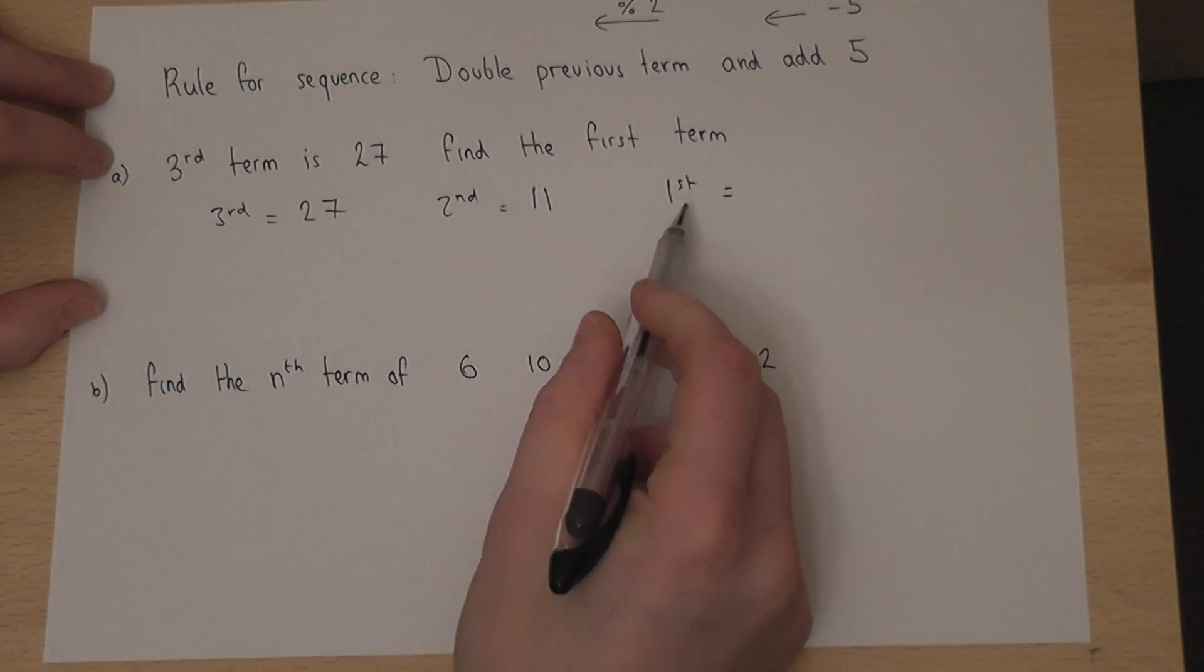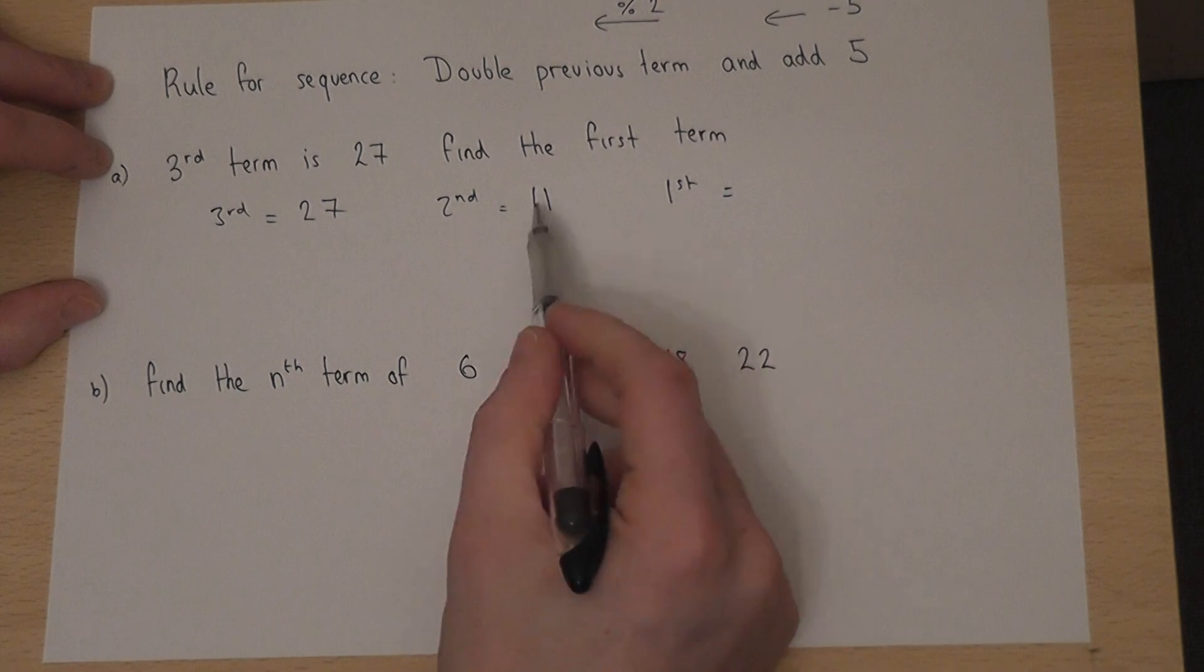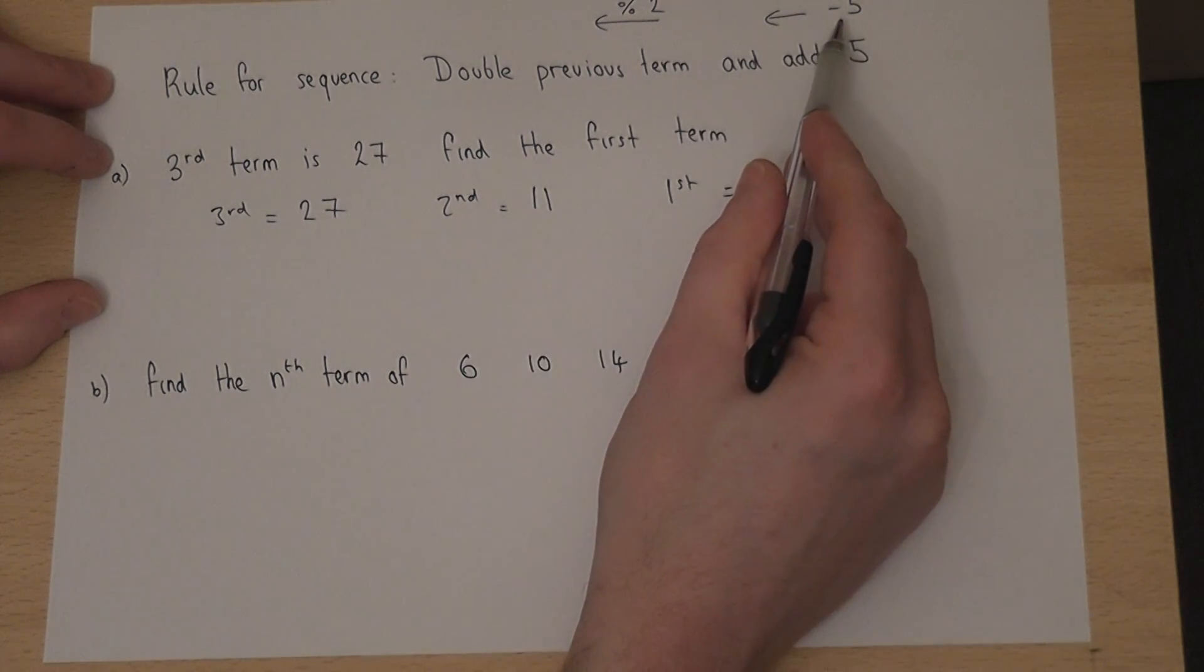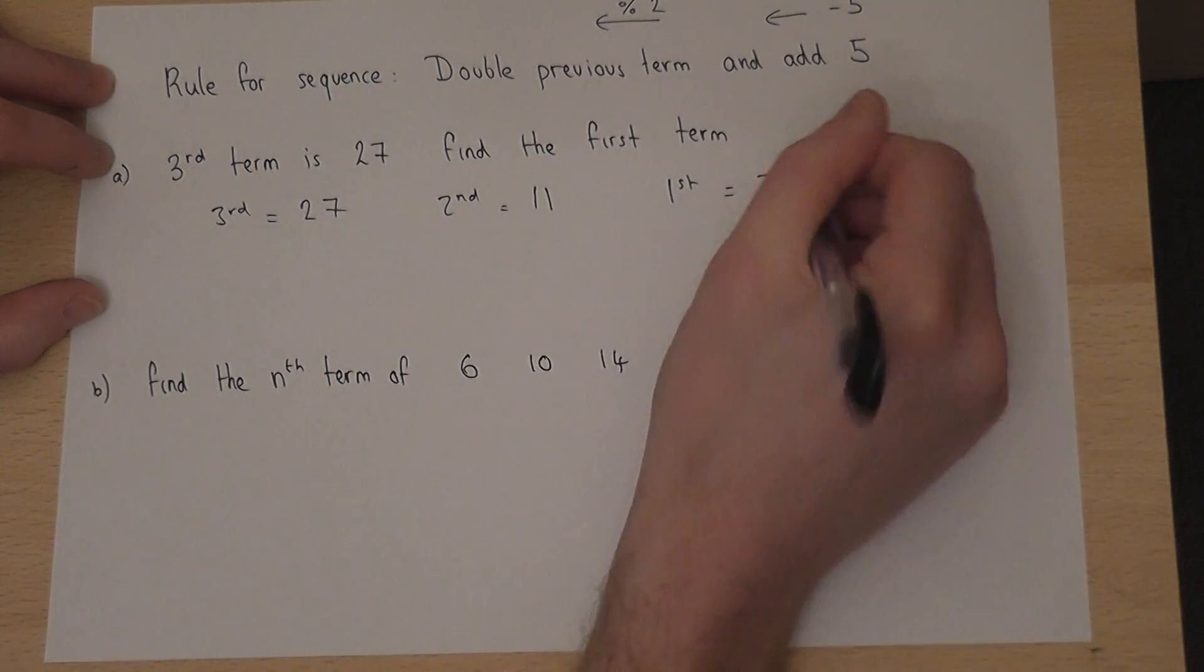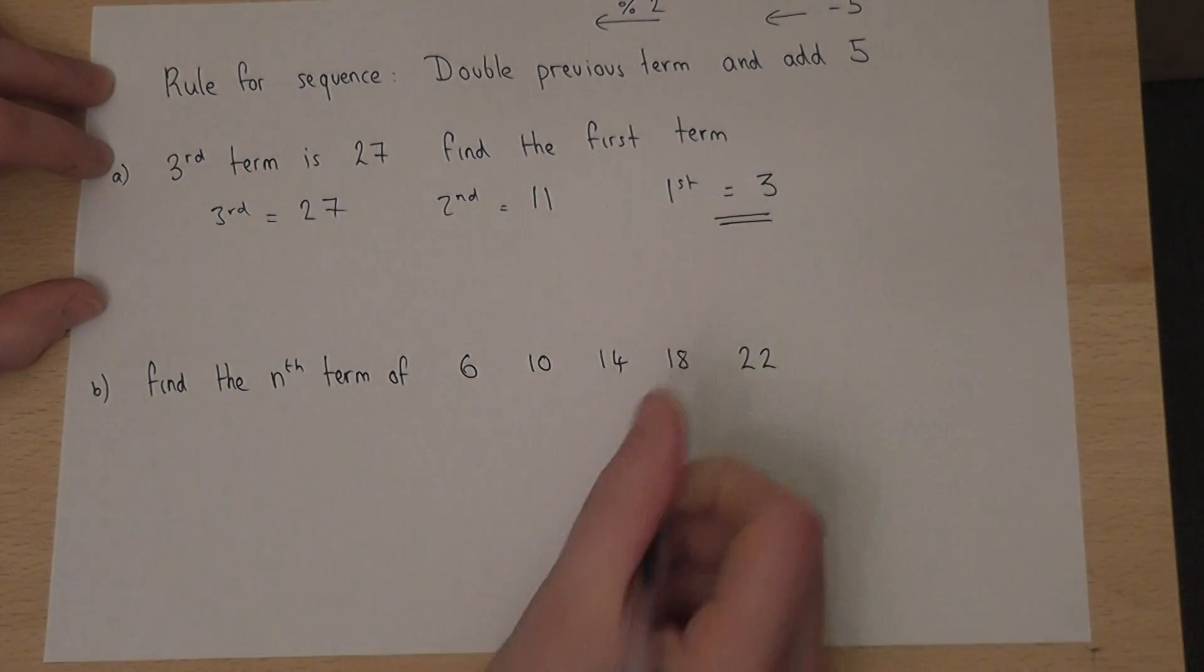Then, to get to the first term, we do it again. 11 take away 5 is 6. Then divide by 2 is 3. So the first term is 3.